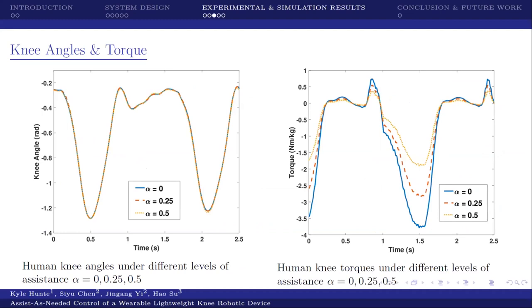Moving on to the second set of results, we show here the knee angles and the knee torques. We show for the knee angles that at each value of alpha, we do not deviate much from the actual reference values of the angles. We show here in the second torque graph that we are able to reduce the value of the applied torque as we increase the value of alpha.